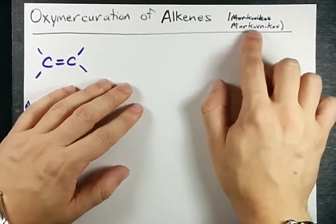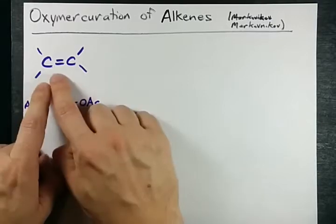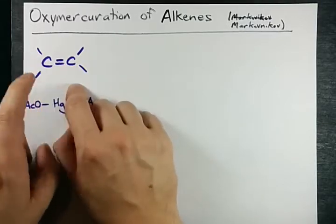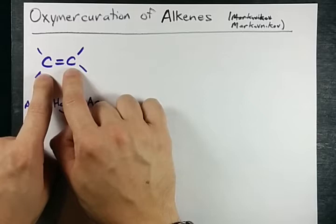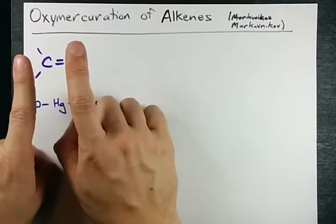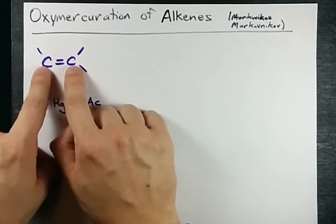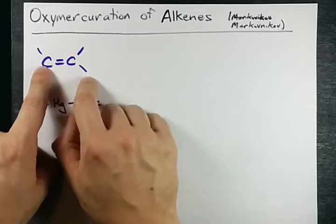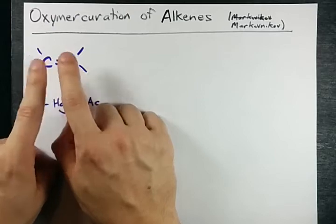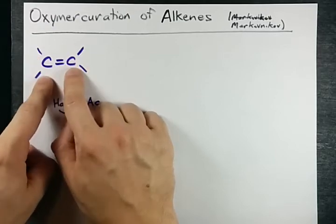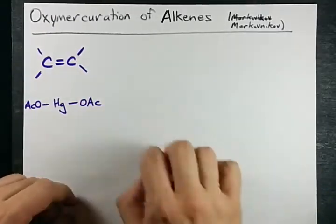First thing I want you to remember is that this is a Markovnikov addition. The double bond's going to break open: H goes onto one of the carbons, OH goes onto the other. The OH will be attached to the carbon that is more substituted. Put another way, the carbon that already has more hydrogens gets the hydrogen, and the other one gets the OH.